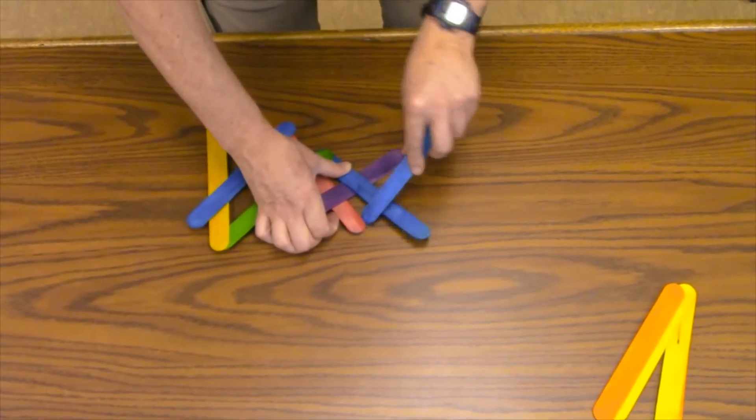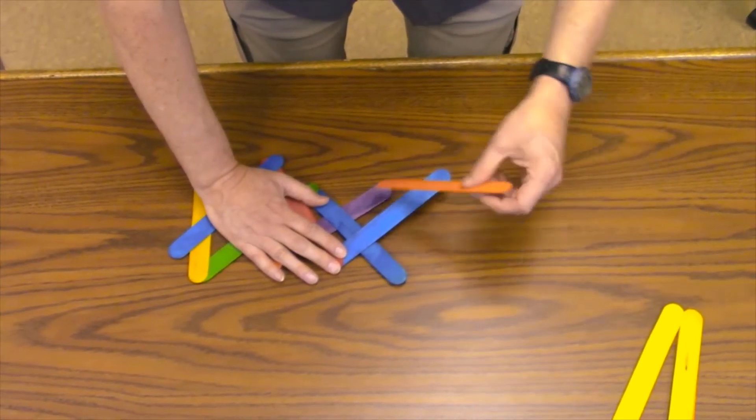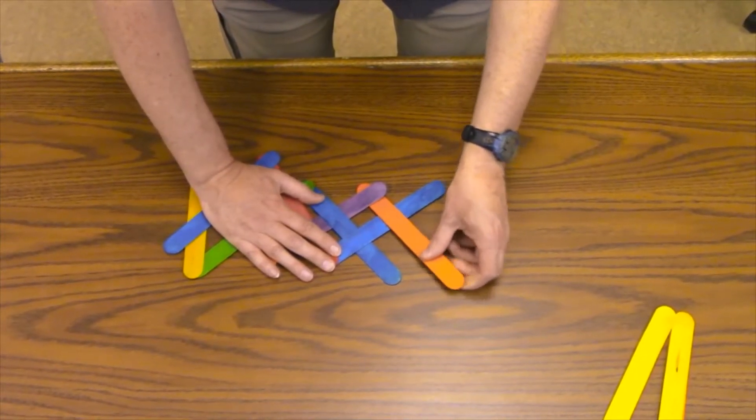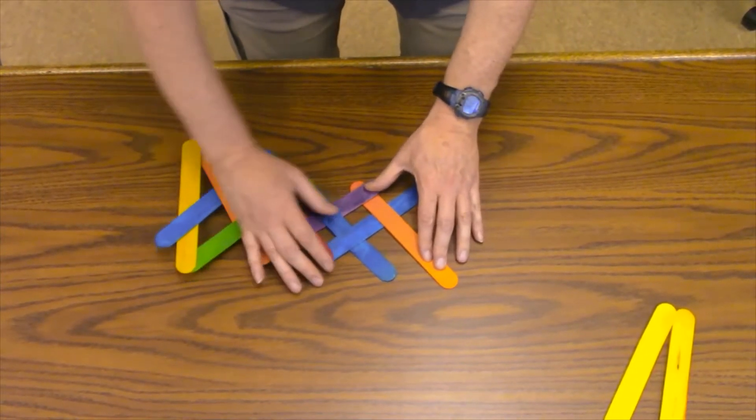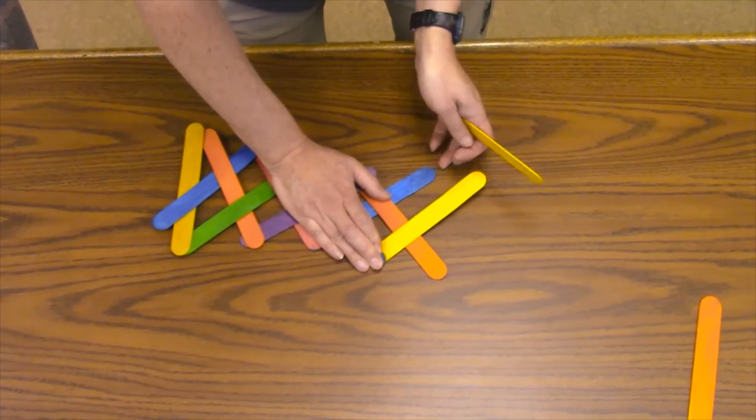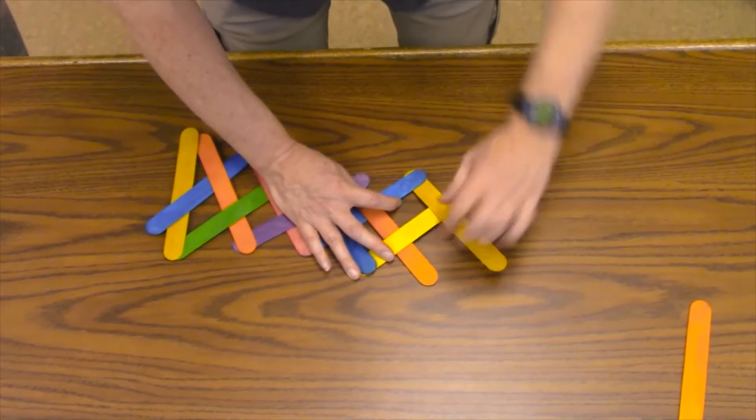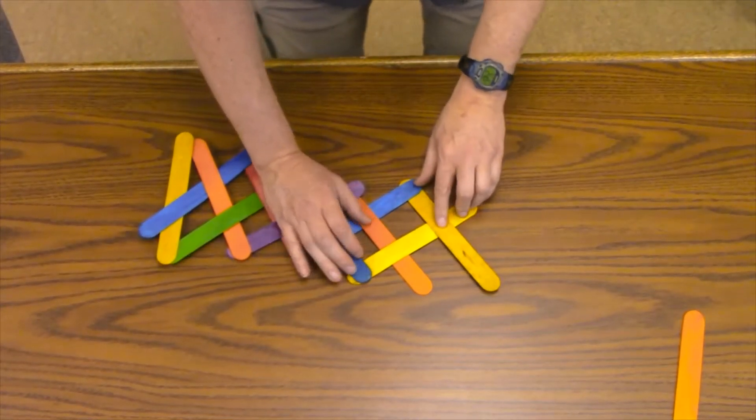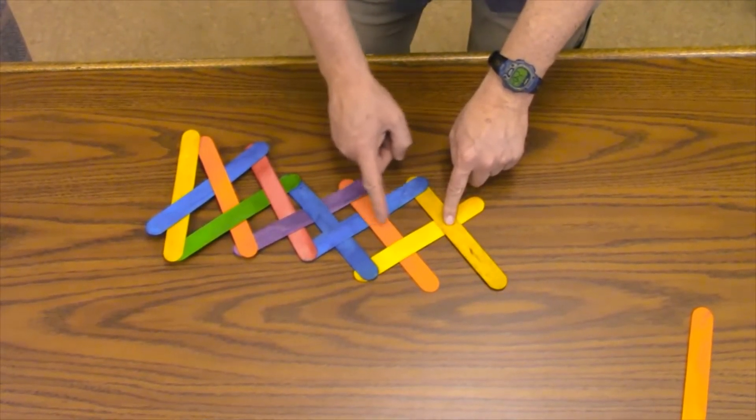Once the weave has started, it's a lot easier. Now it's just a matter of constantly weaving one stick on top of and under the other one. So the stick you're adding always goes under that stick, but on top of that one. So you can see how this weave is alternating.